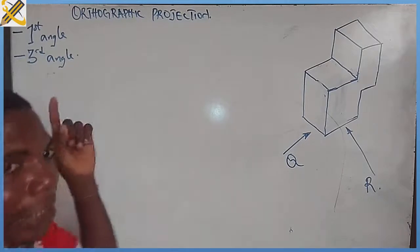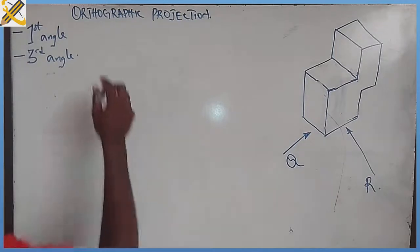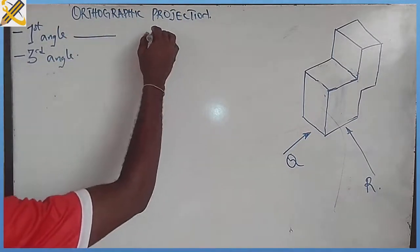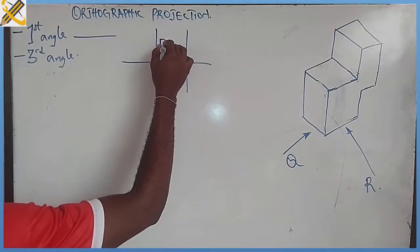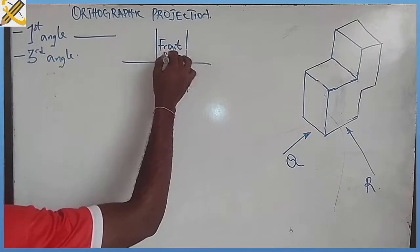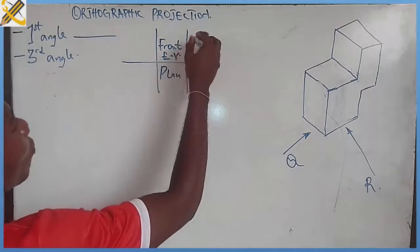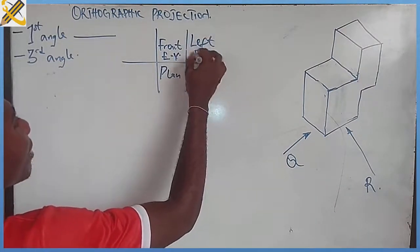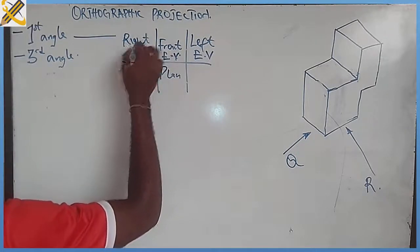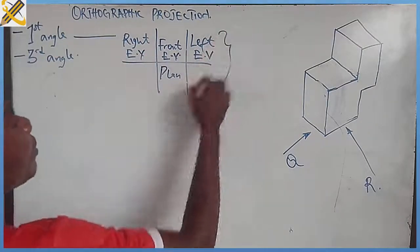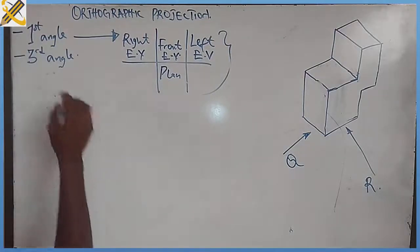In the first angle orthographic projection, this is how the objects are arranged. We have this chart: we have the front elevation, then we have the plan, here we have the left end view, and here we have the right end view. So this is the chart for first angle projection.